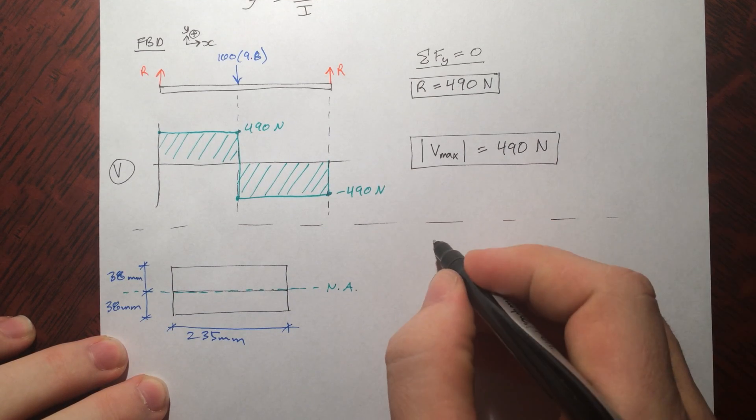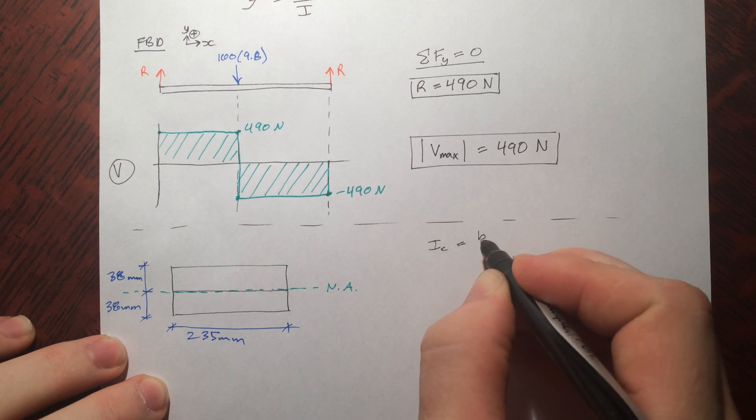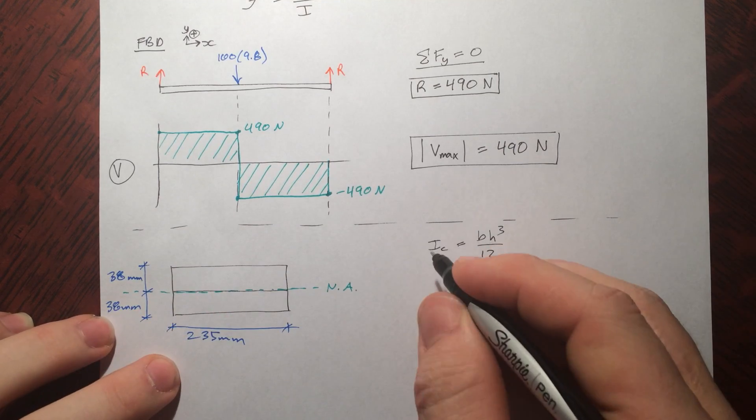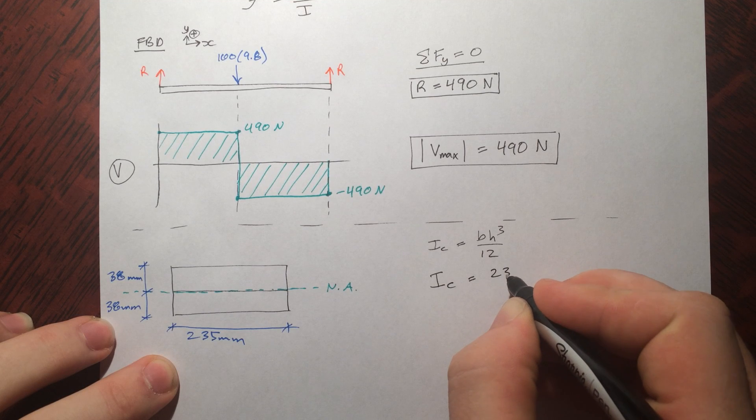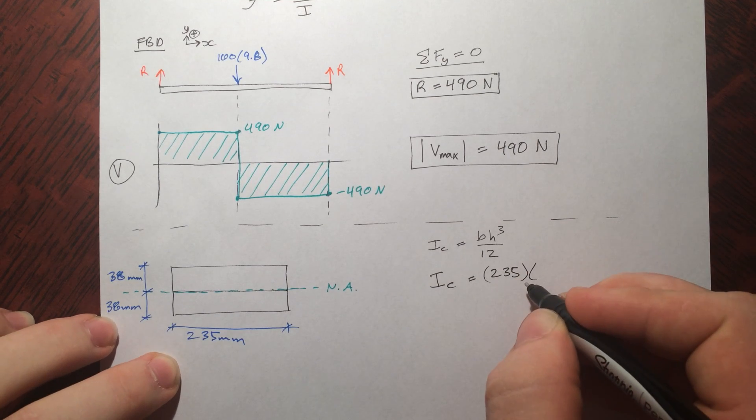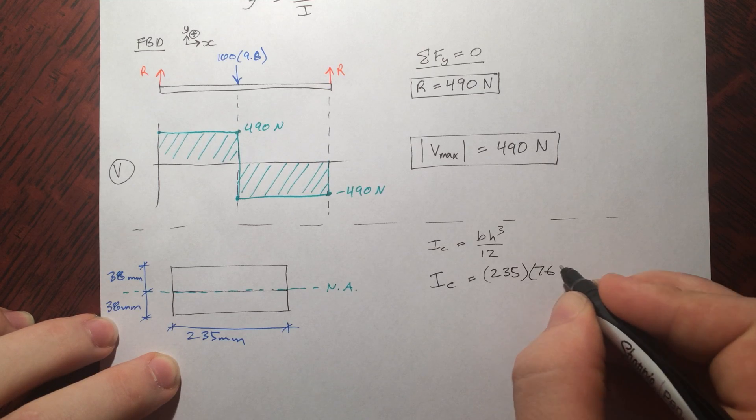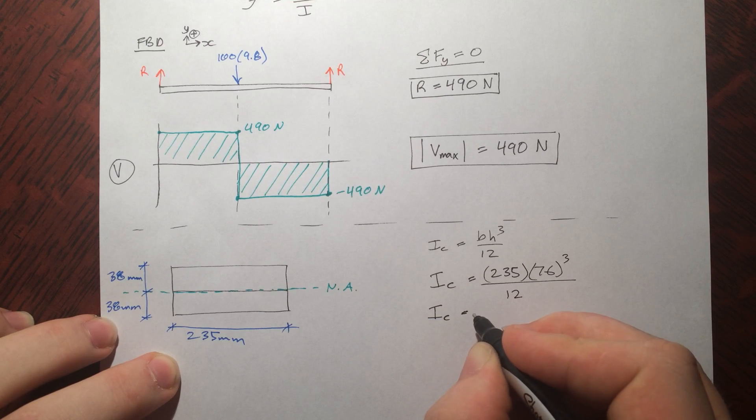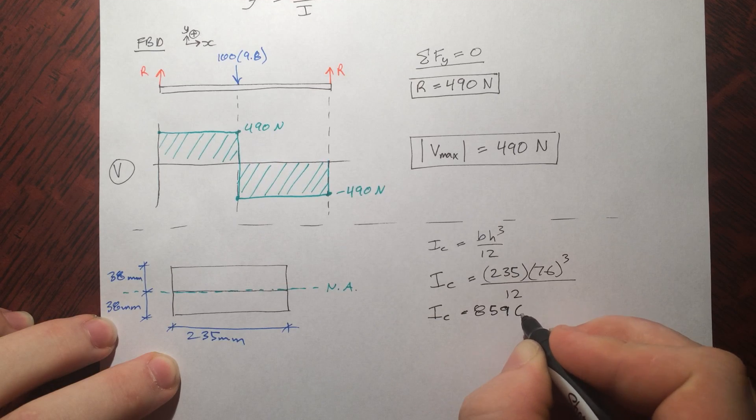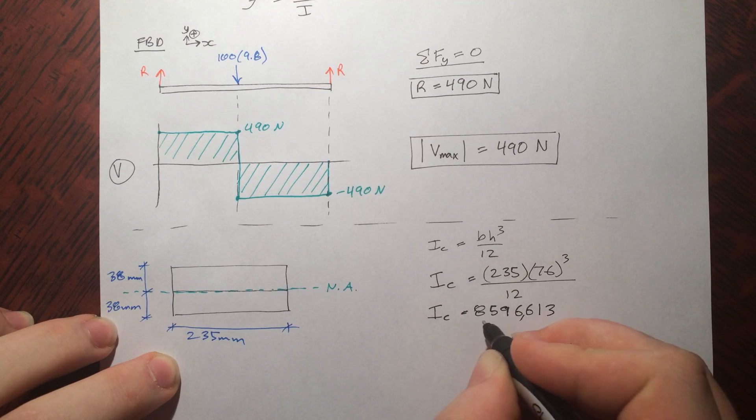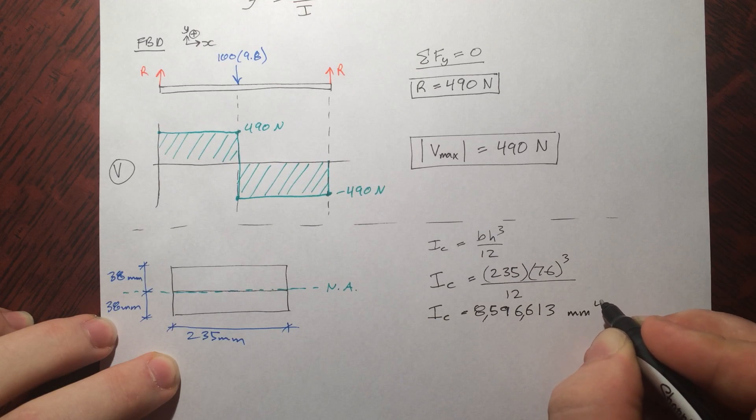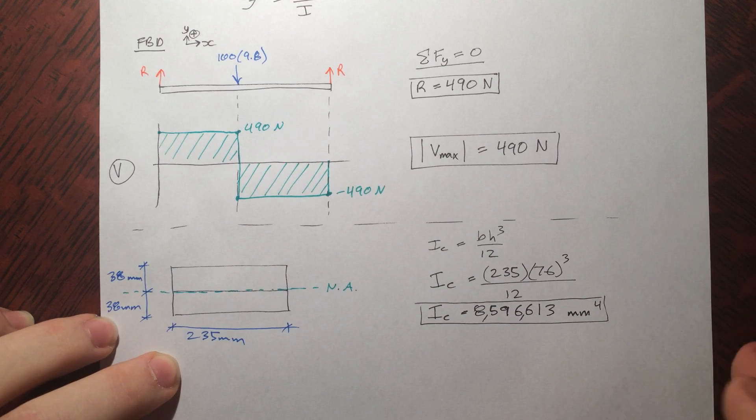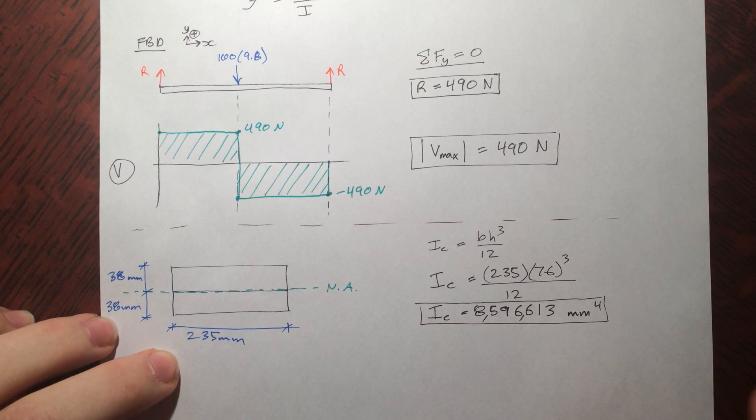So, throwing in some dimensions. The moment of inertia, as we know for anything about its centroid, is base height cubed by 12. So, in our case, the base is this. The height is the full thing here. So we have it in millimeters to the 4. I could convert it to meters, but I want my spacing in millimeters. So, I'll just roll with it.